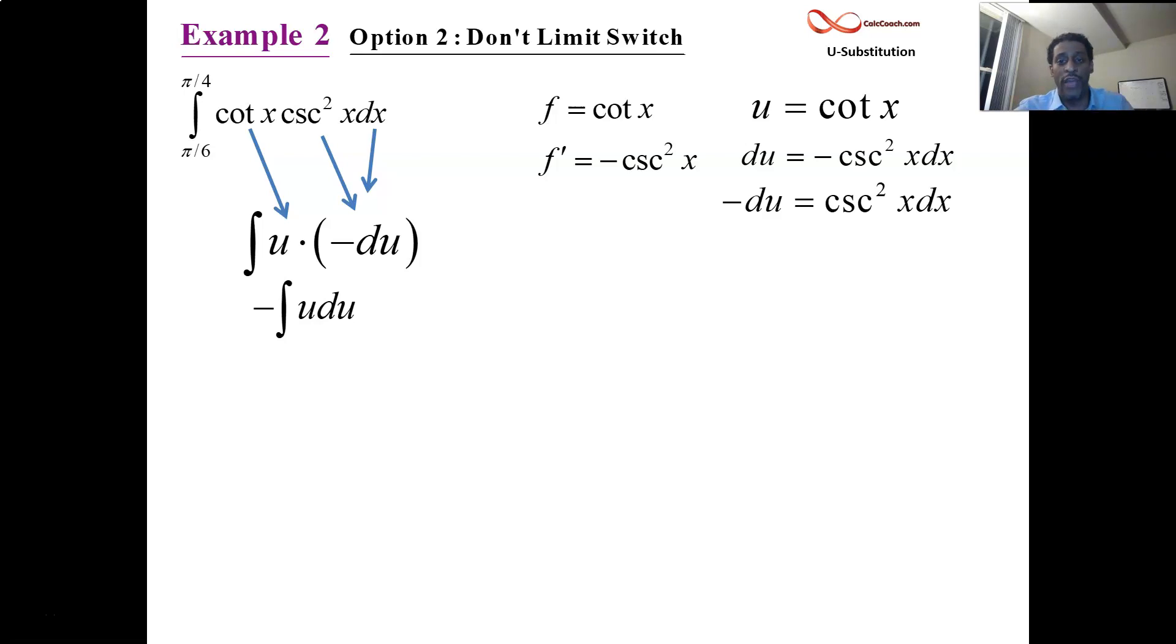Now we have the most simple integral of all. What function has u as its derivative? It's u squared over 2. Notice my integrals do not have bounds. When you're not doing a limit switch and you work the integral out, you do it as if it's indefinite. And then you switch back and you plug in the original bounds. So negative u squared over 2. Let's sub back in. What was u? u was cotangent x.